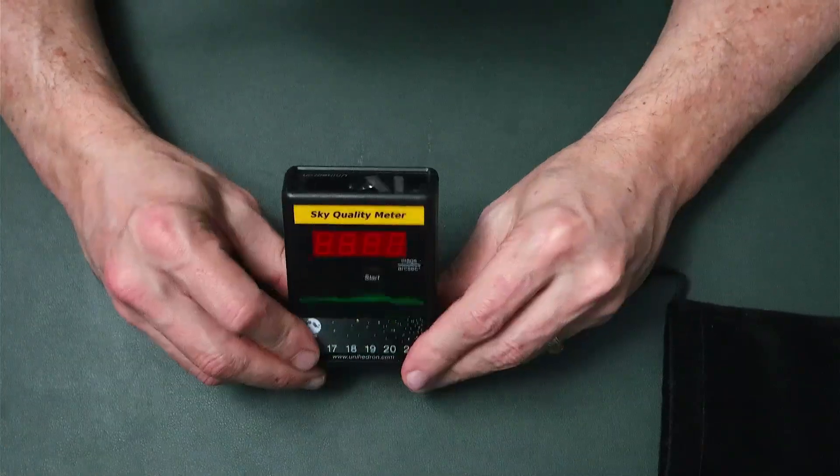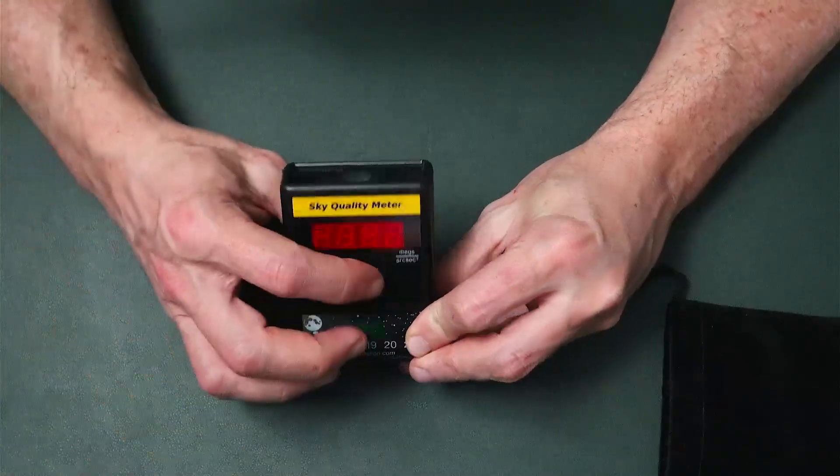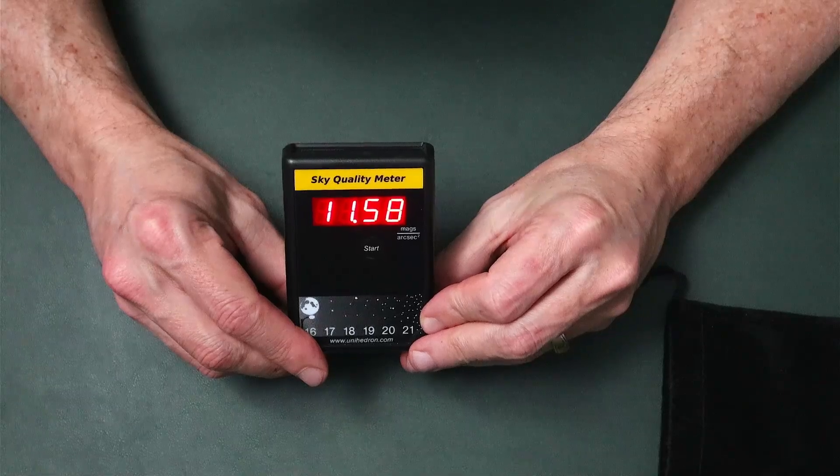So when you take a reading under urban skies or in a well-lit office like I am right now, if I hit my start button, the measurement is pretty much instantaneous. That was about a second, right?